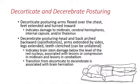Decerebrate posturing is sort of the opposite of decorticate posturing. With decorticate posturing, the upper extremities are drawn up and the lower extremities are extended, feet turned in. With decerebrate posturing, the head and back are arched backwards — a posturing called opisthotonos — the arms are extended by the side instead of drawn up, and the teeth are clenched. It can occur on one side if only one of the two motor tracts is involved. When decerebrate posturing occurs, it indicates brainstem damage below the level of the red nucleus.